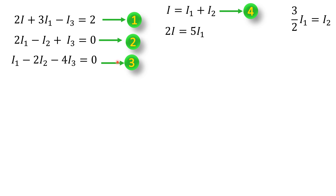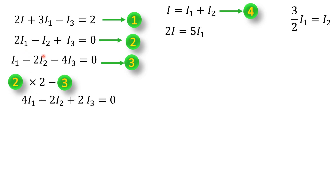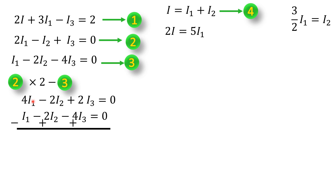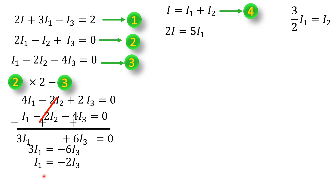Next, we find I3 from Equations 2 and 3. Multiplying Equation 2 by 2 gives 4I1 minus 2I2 plus 2I3 equals 0. Subtracting Equation 3 from this, the I2 terms cancel and we get 3I1 plus 6I3 equals 0. Rearranging: 3I1 equals minus 6I3. Dividing by 3: I1 equals minus 2I3, so I3 equals minus 1/2 I1.